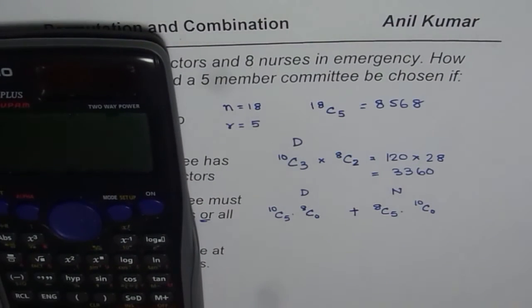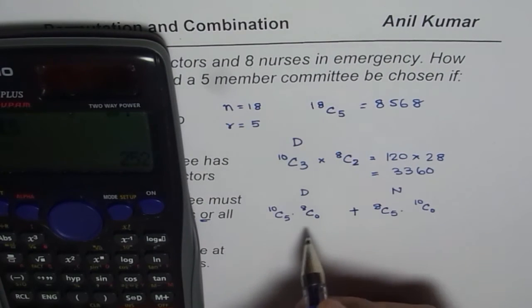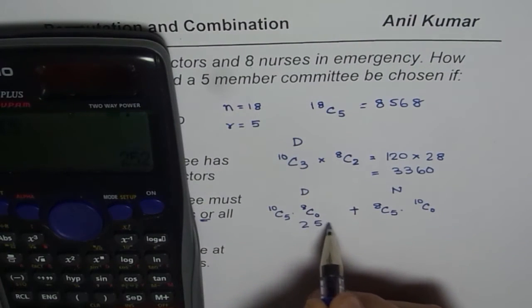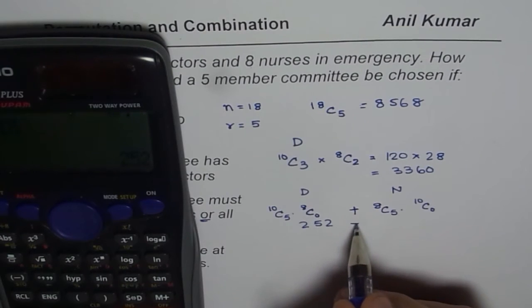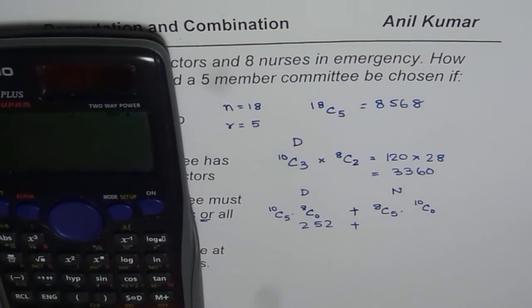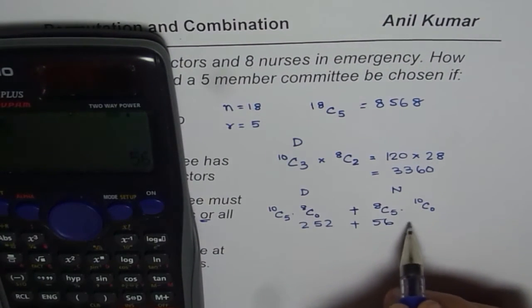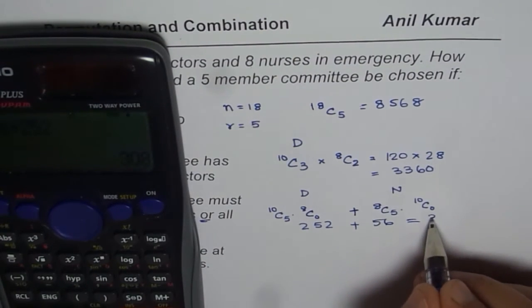Calculating Part C: 10C5 equals 252, and 8C5 equals 56. Adding them together: 252 plus 56 gives us 308 as the answer for Part C.